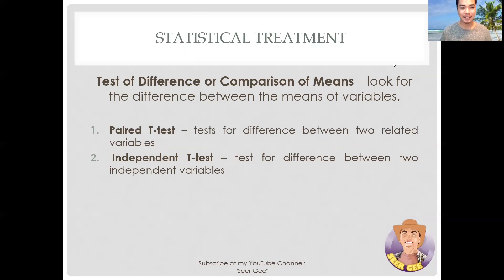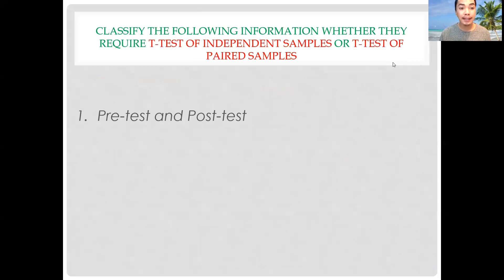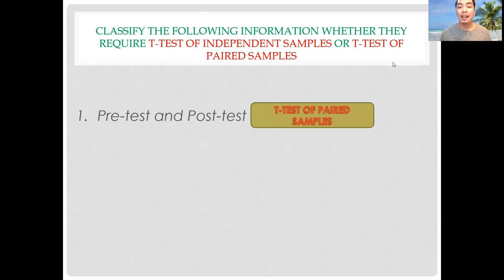Now let's have a test. Classify the following whether they require a t-test of independent samples or t-test of paired samples. First: pre-test and post-test. The answer is t-test of paired samples, since we are testing for the difference between these two related variables. As discussed, paired t-test is used when each observation in one group is paired with a related observation in the other group. Next: gender. The answer is t-test of independent samples, since we are testing for a difference between two independent groups — male or female.